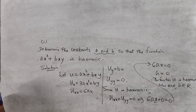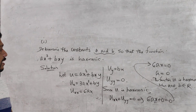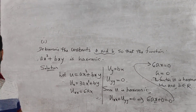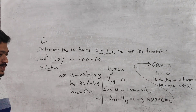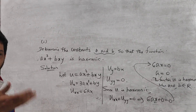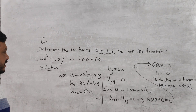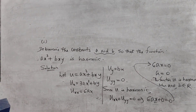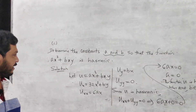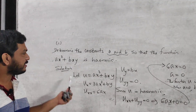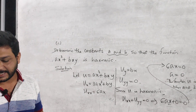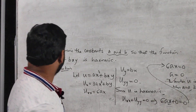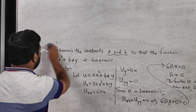This is the second type of question in your material. To summarize: first, we defined the harmonic function. The second type asks you to verify whether a given function is harmonic. The third type gives a function stated to be harmonic and asks you to compute the constants appearing in that function.